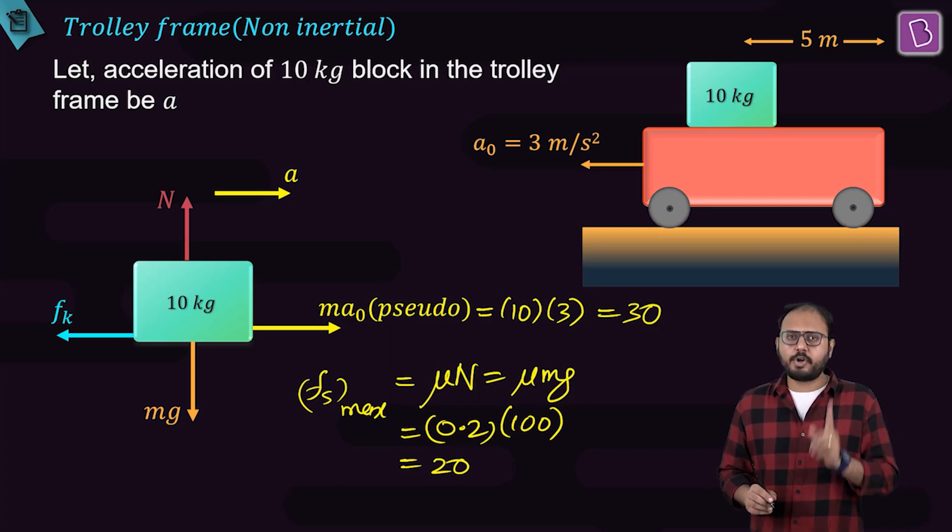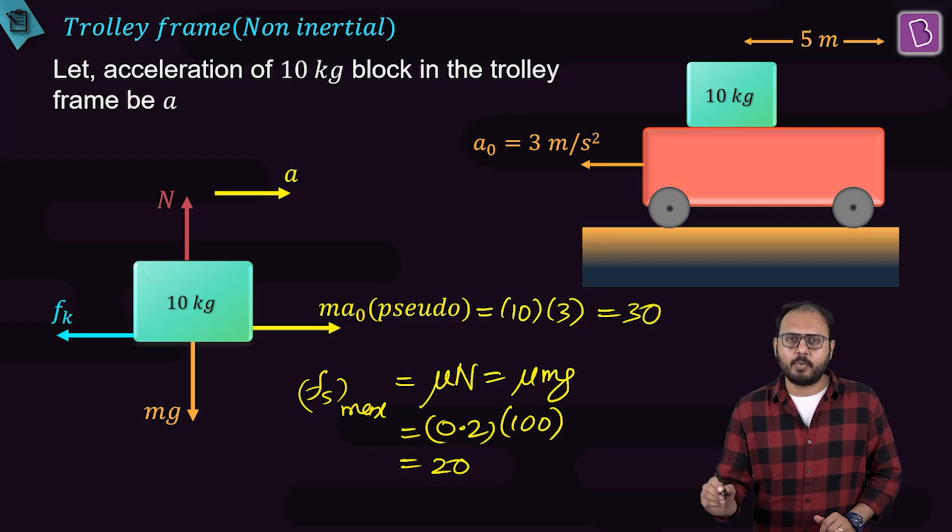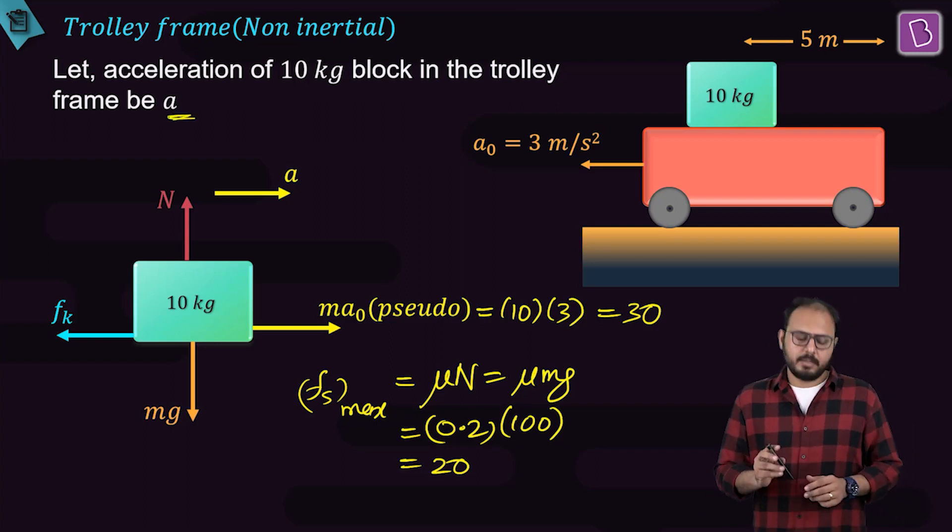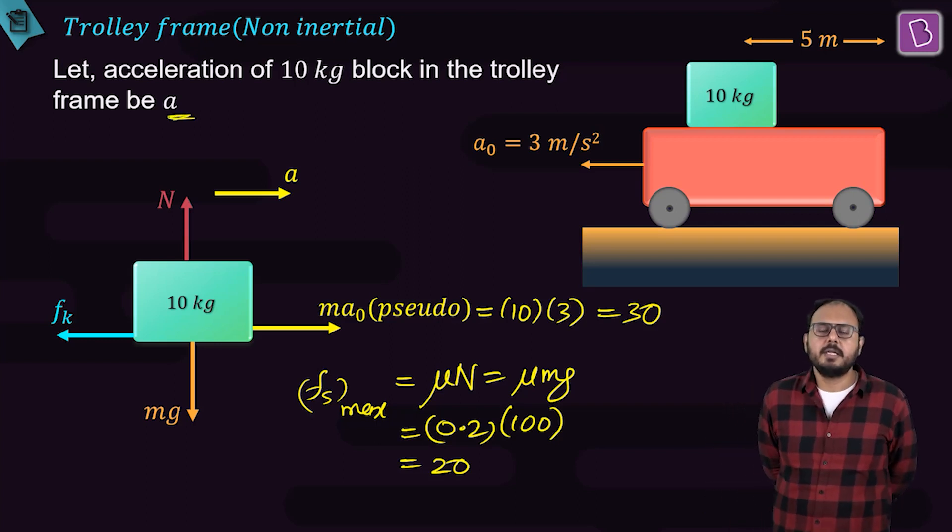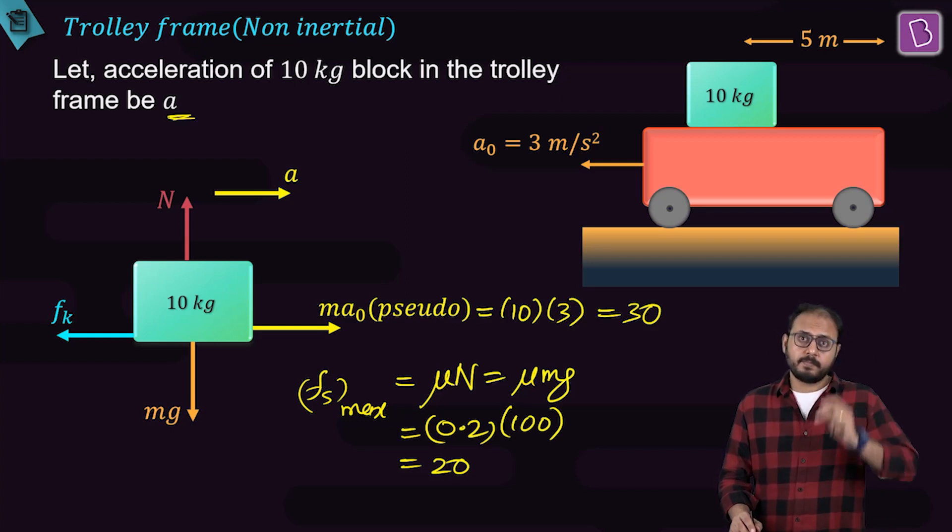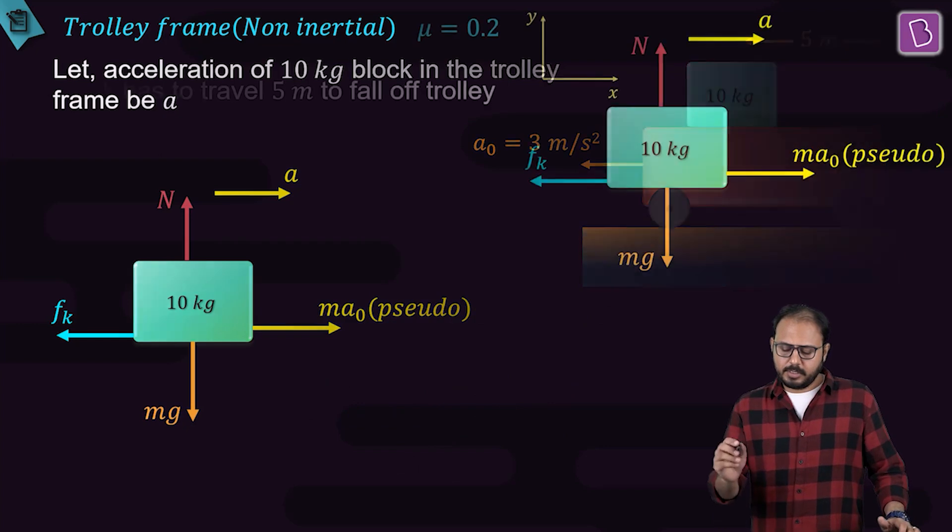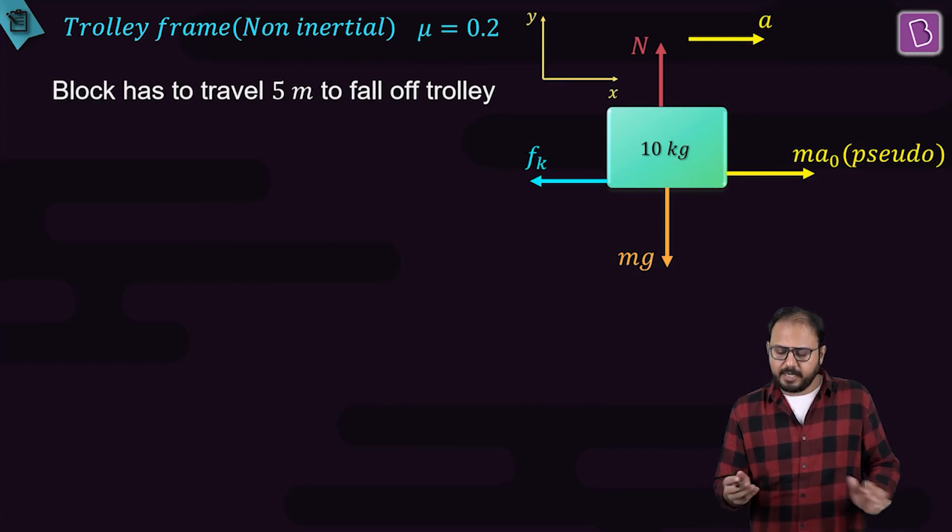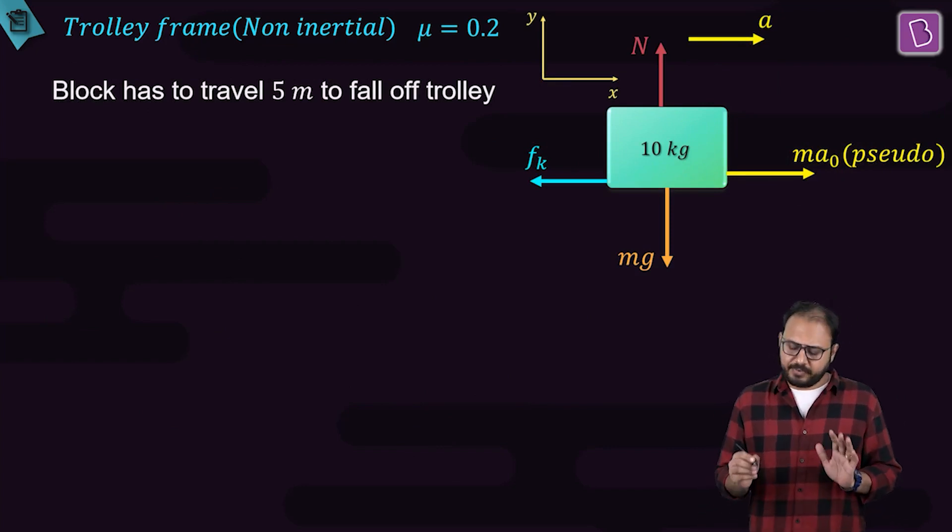You are sure in trolley frame, the block will have an acceleration backwards. Let that acceleration be A. Did you understand my analysis? Why friction will act? I found out FSmax compared. Are you satisfied with the free body diagram now? Why Fk is acting?